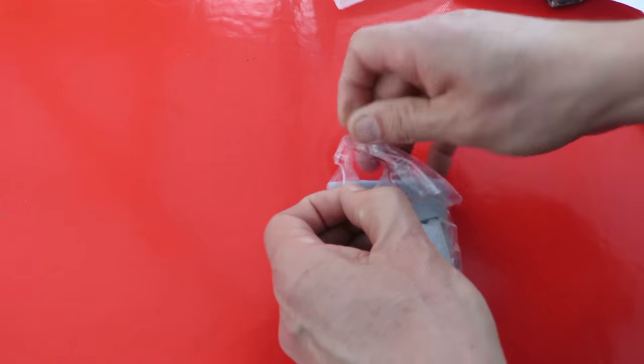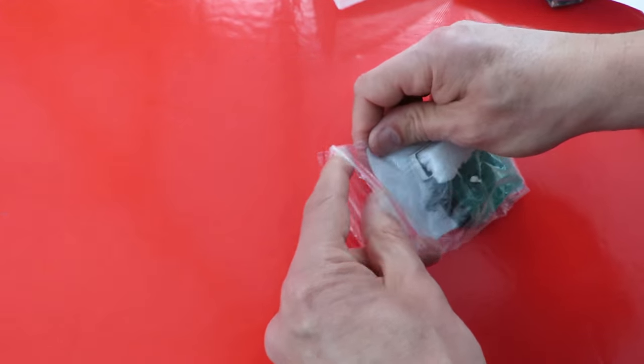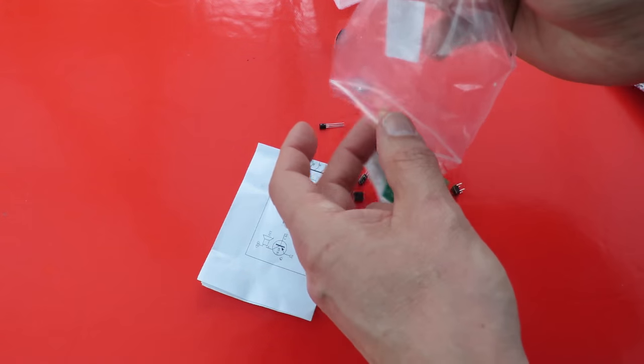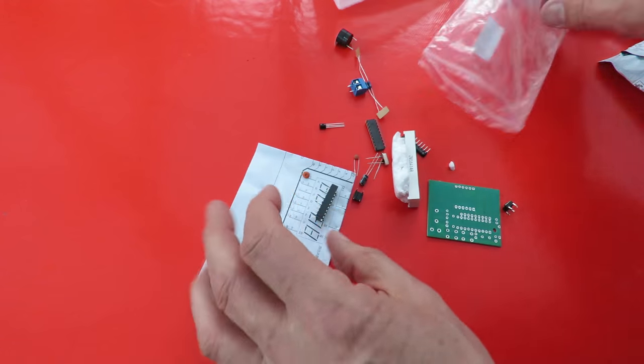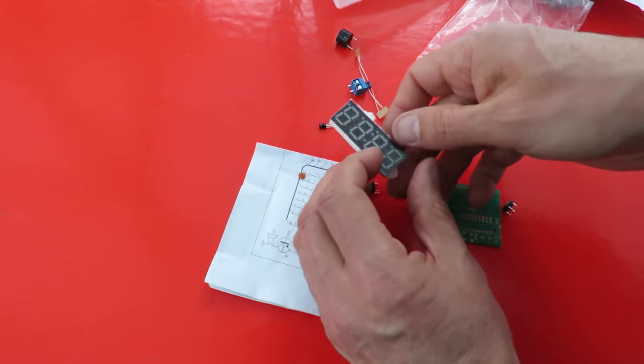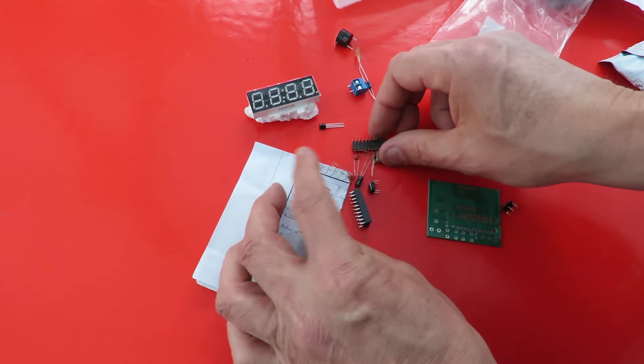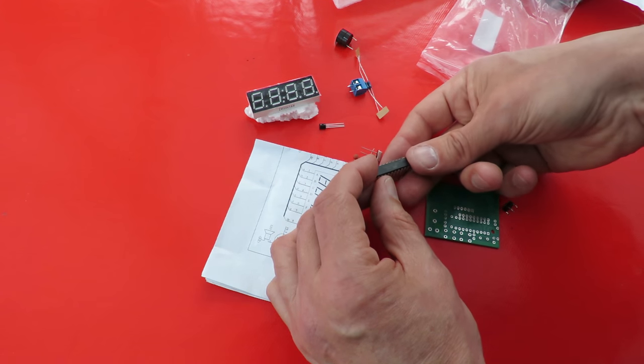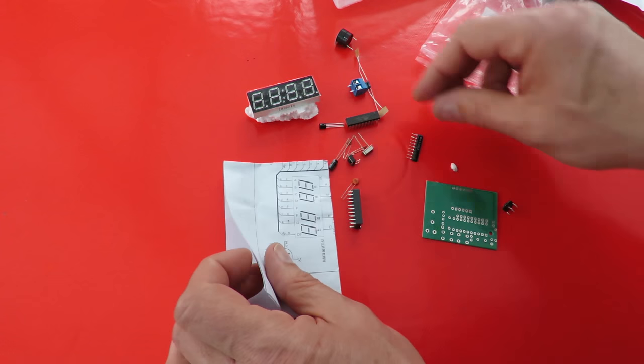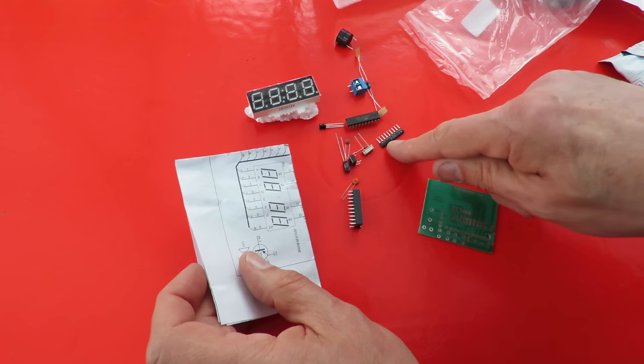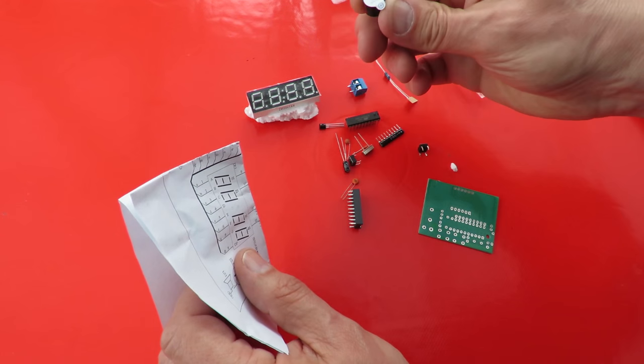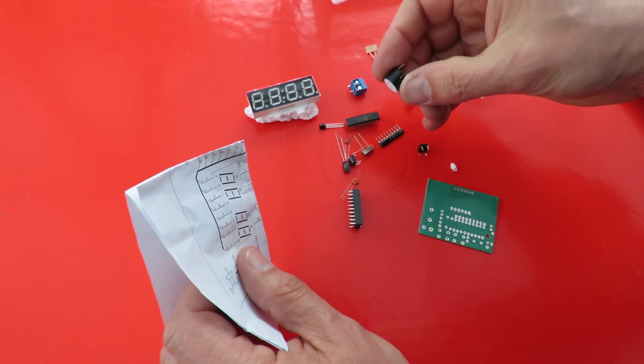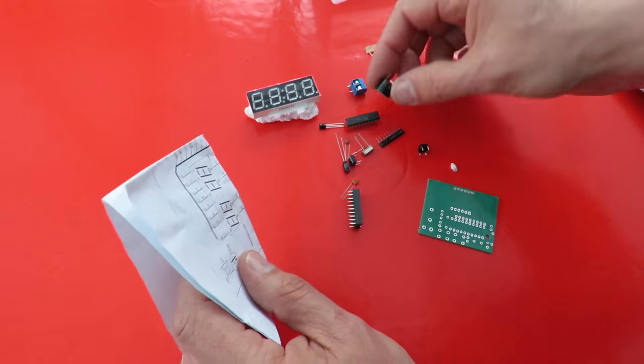Can't get this one open. There we go. We've got a few bits and pieces. Display. I haven't got my glasses on so I can't read what that one says. I know that's a resistor. That's a speaker isn't it?